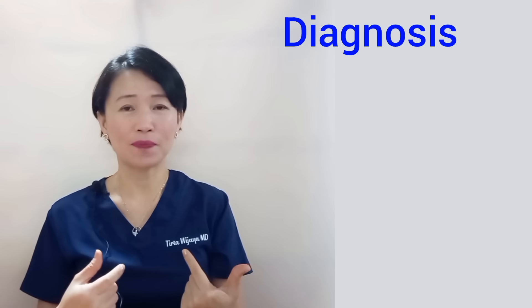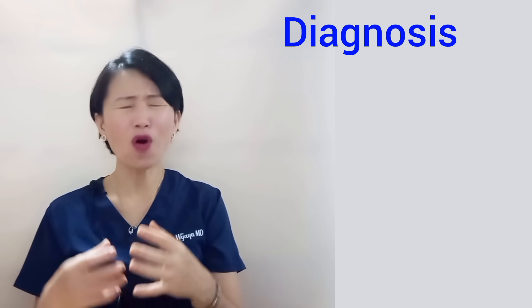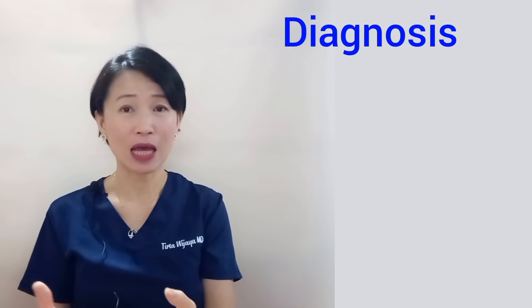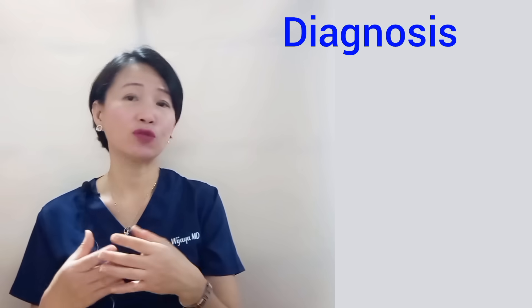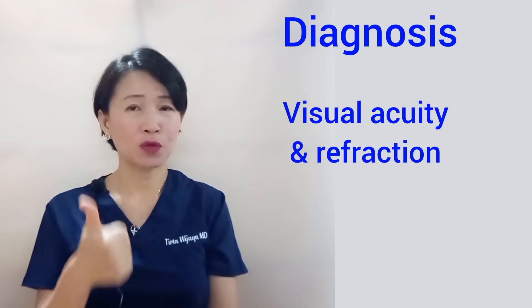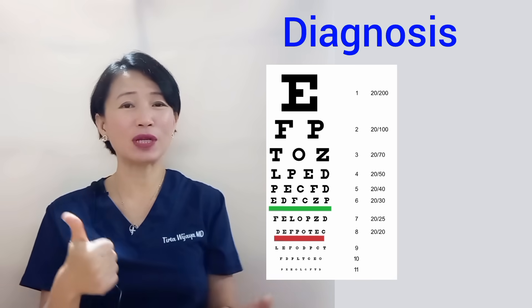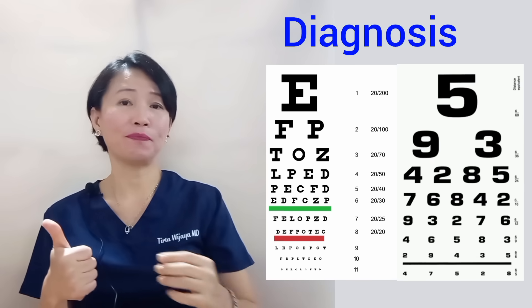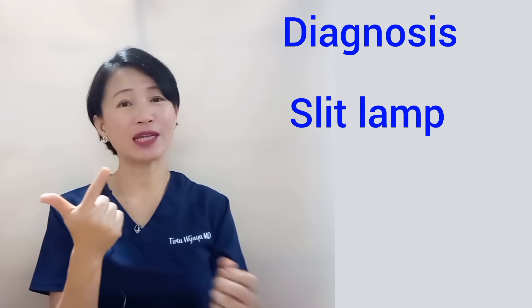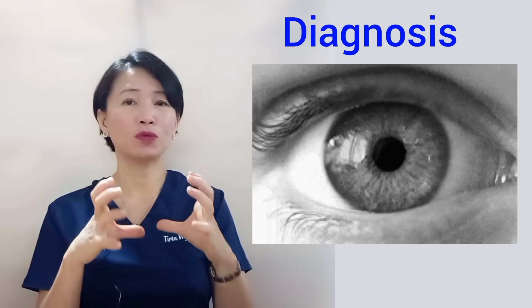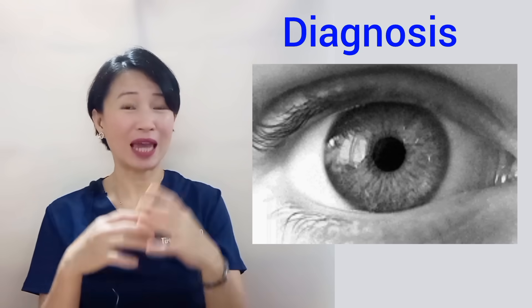To diagnose cataract, the doctor will need to check the affected eyes physically. Some cataracts are so fully developed that everyone can recognize it just by looking at the eyes. But for most patients, doctors need to do a comprehensive eye examination, including a visual acuity test where the patient reads aloud some random letters or numbers at a distance, one eye at a time. Then a slit lamp examination checks the cornea, iris, and lens. Most of the time, doctors need to dilate the pupil using a special eye drop to be able to see more.